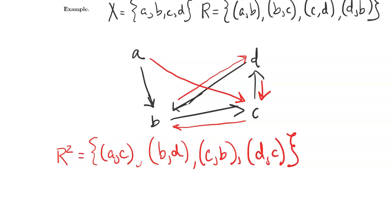So all those red arrows that I'm going to have to introduce to make it transitive are all pairs in R², because they arise from paths of length 2 in R.